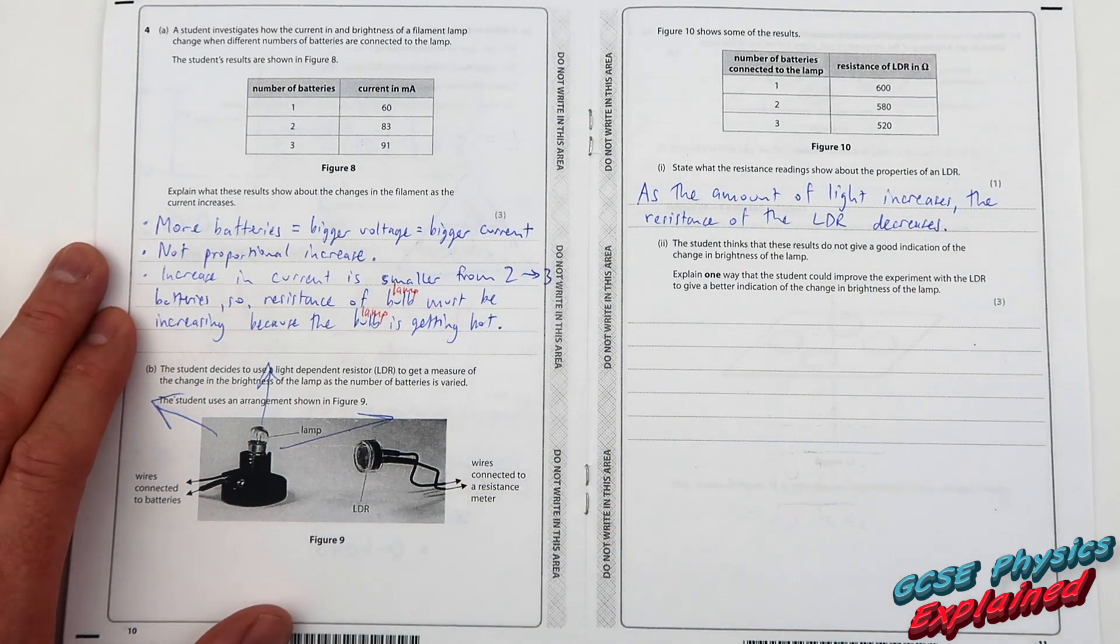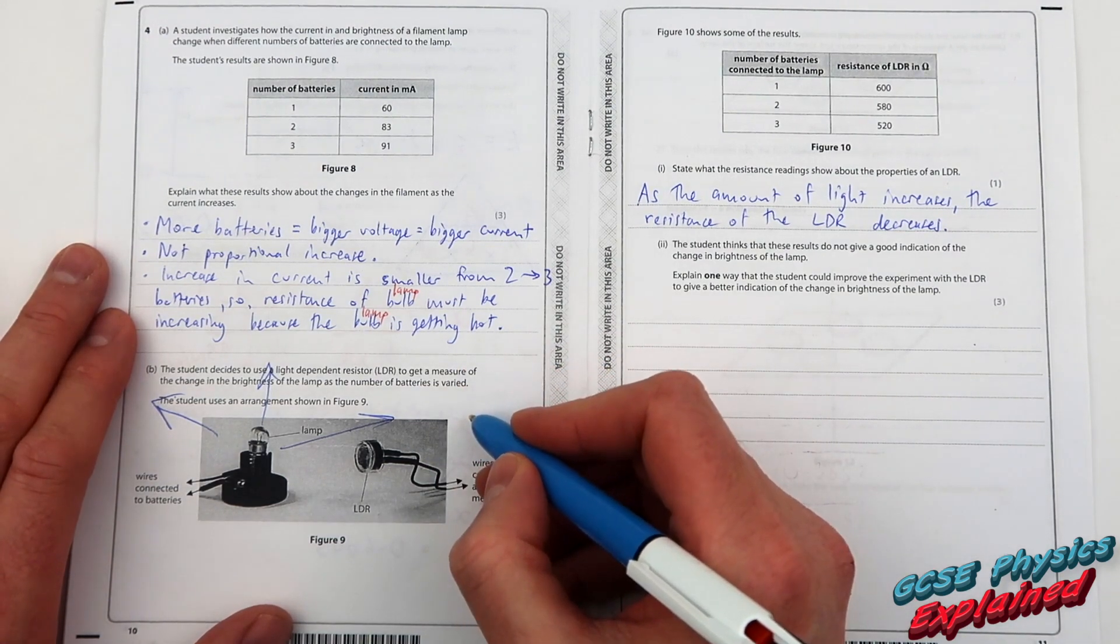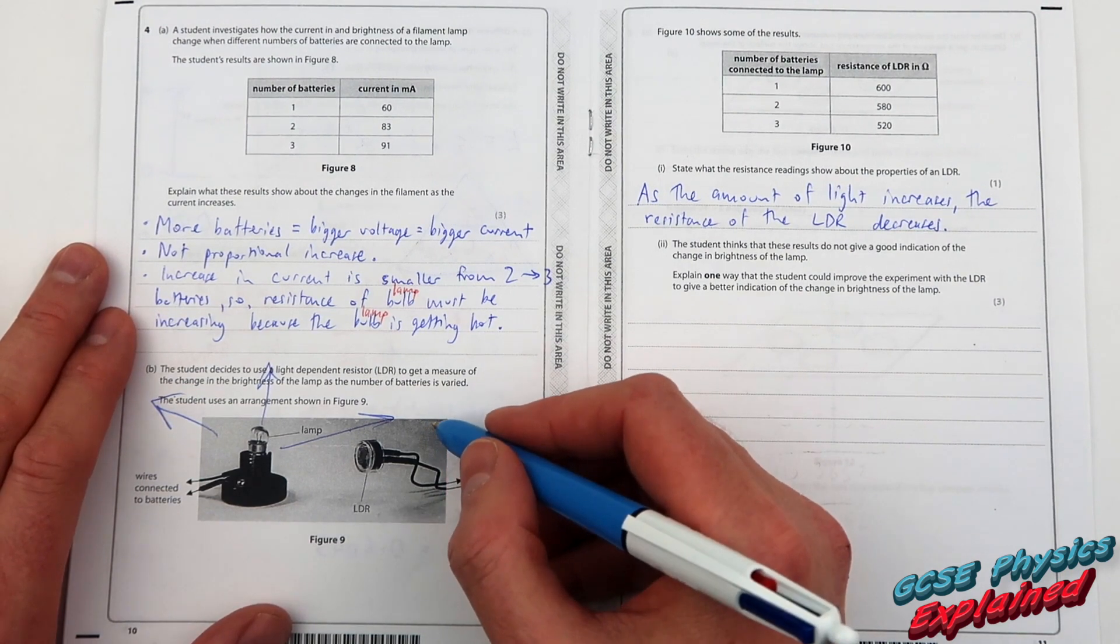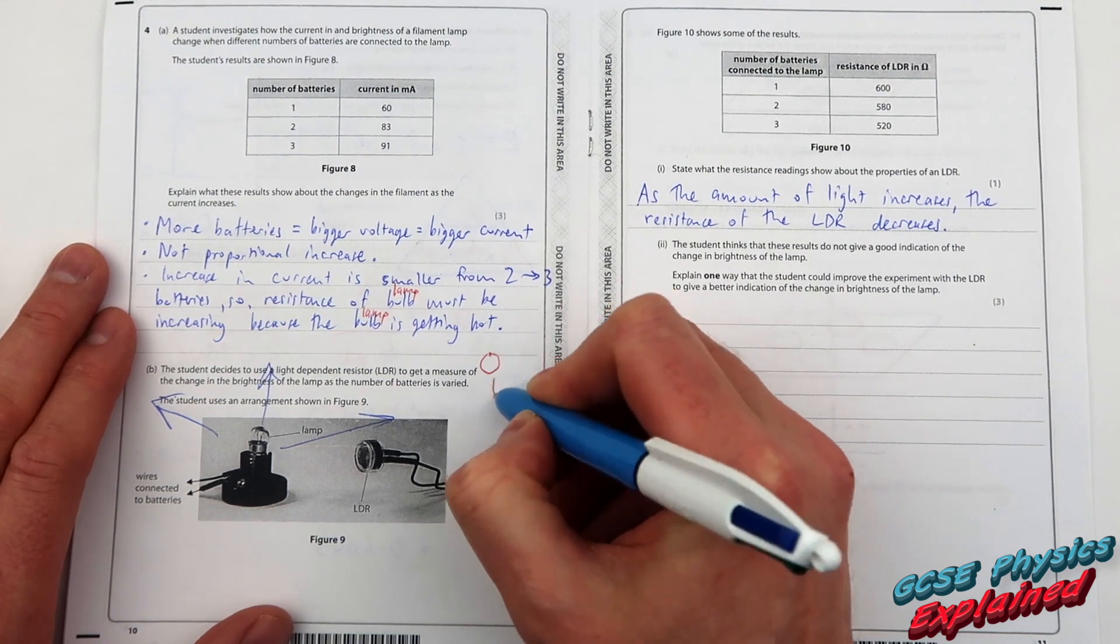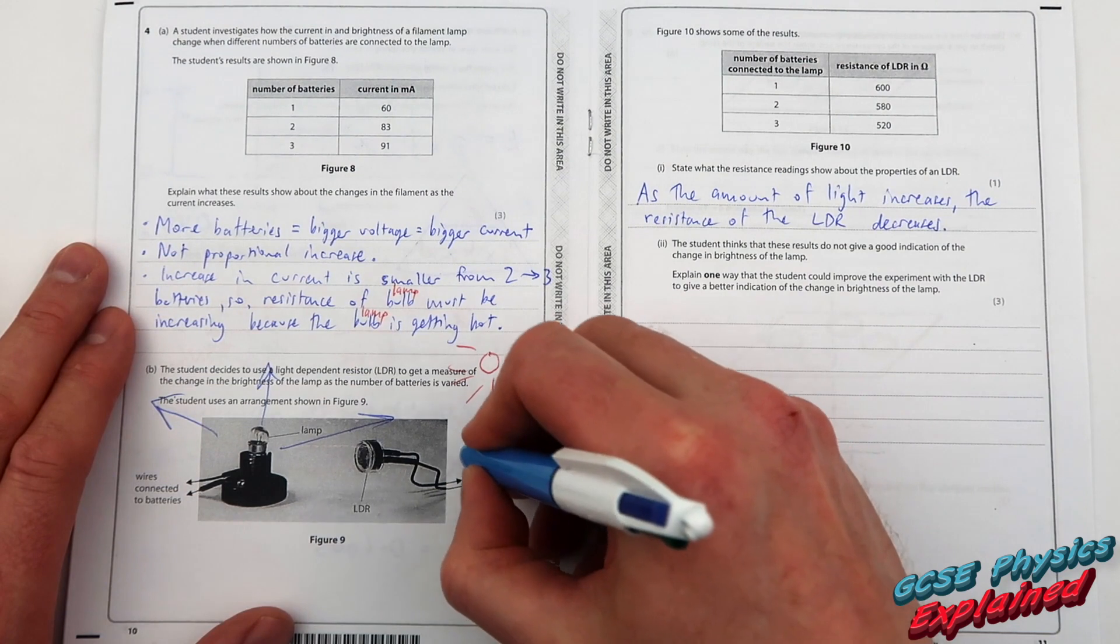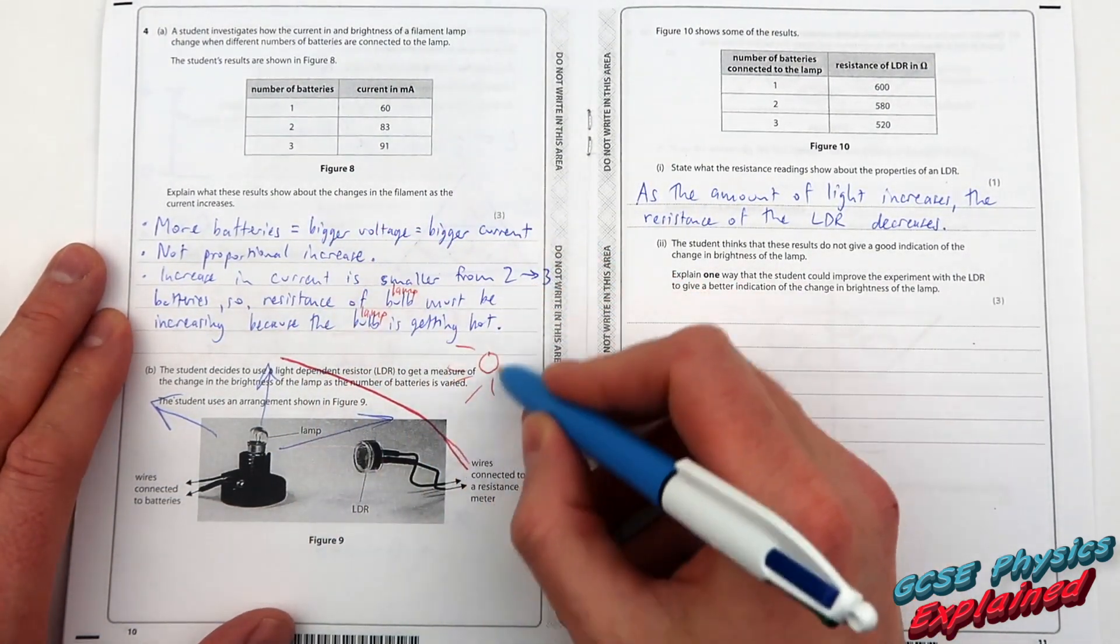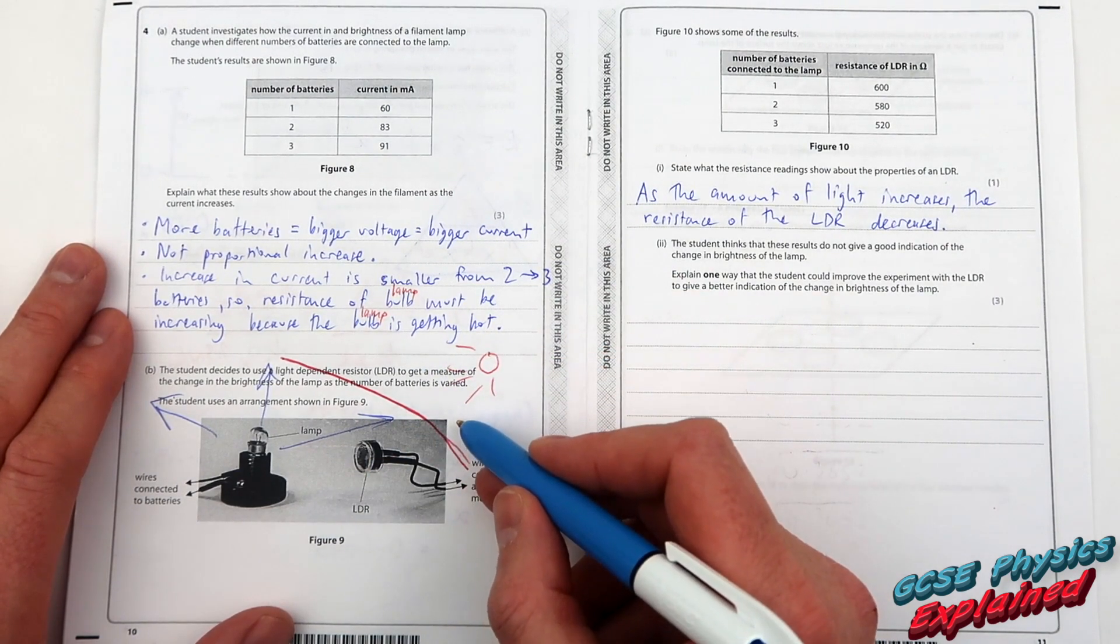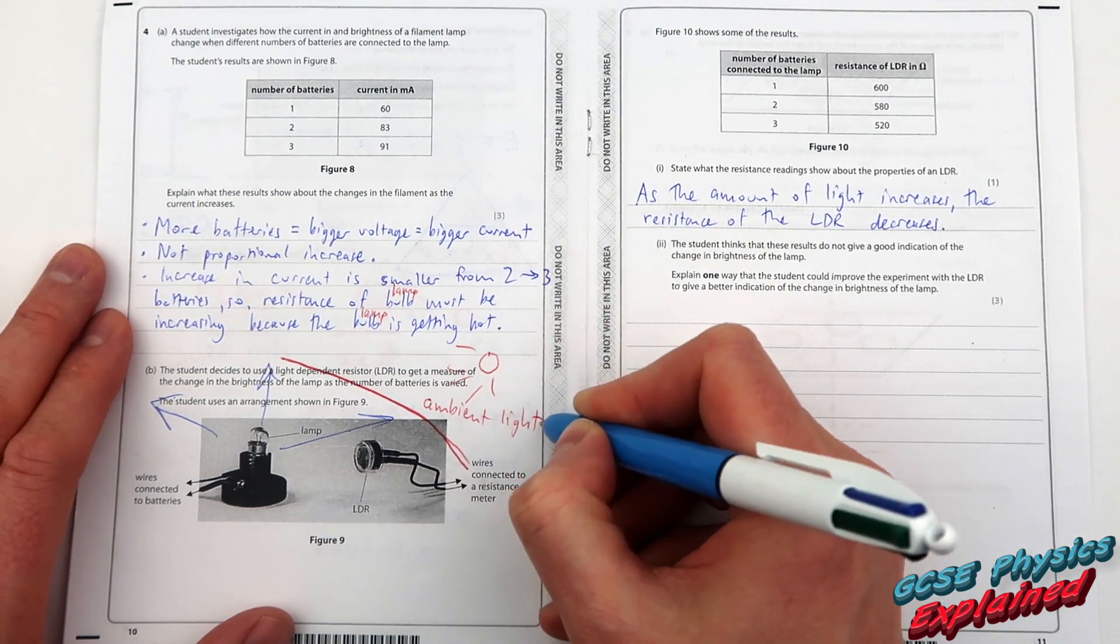And also, if there's other light in the room, which we're assuming there is, because I don't think the scientists will be doing the experiment in the dark, otherwise they'll be bumping into things. Because what if we've got another bulb up here? Or what if the sun's up here shining through a window? Why don't we put a screen in the way to block out the light from other sources? Now that's what we call ambient light, which is just light in the background.